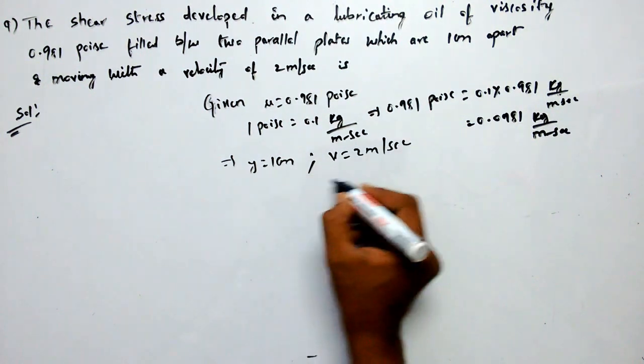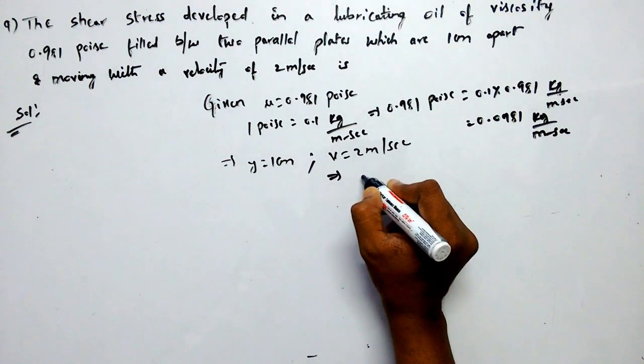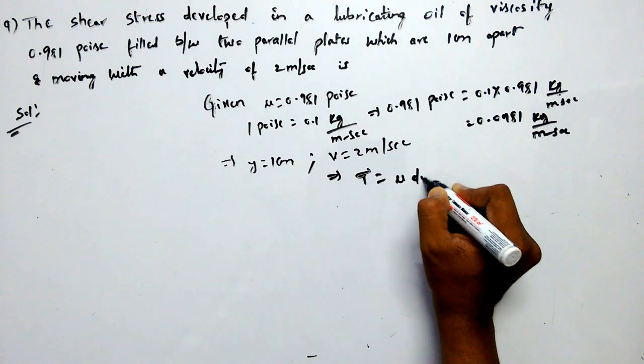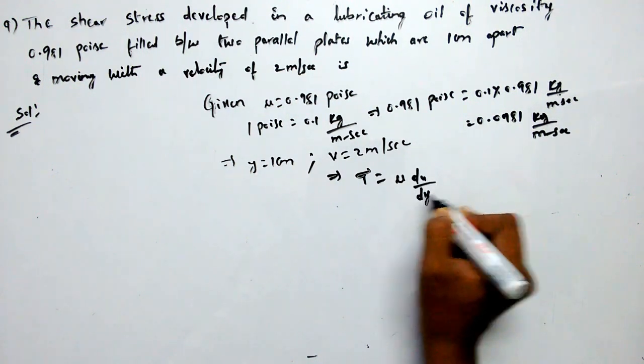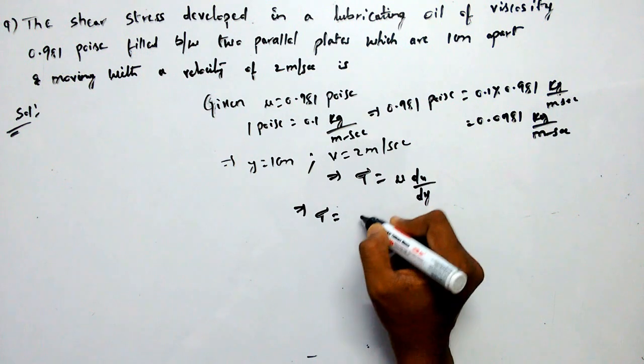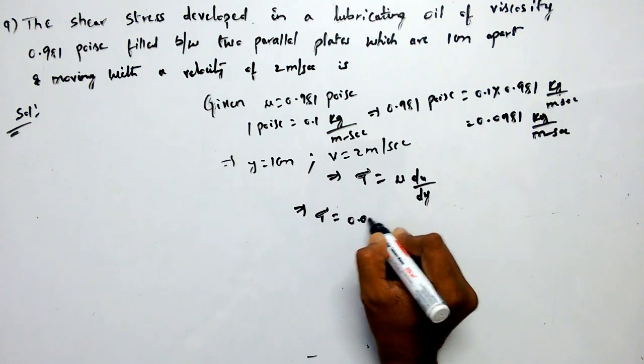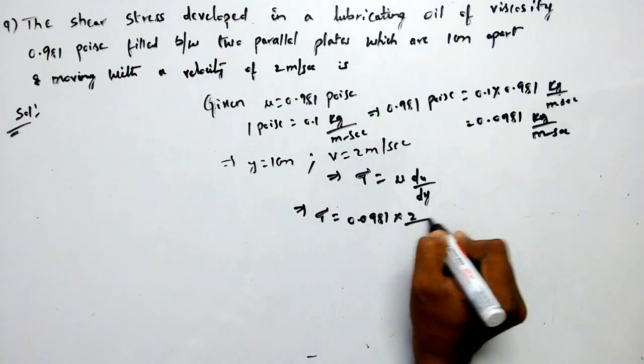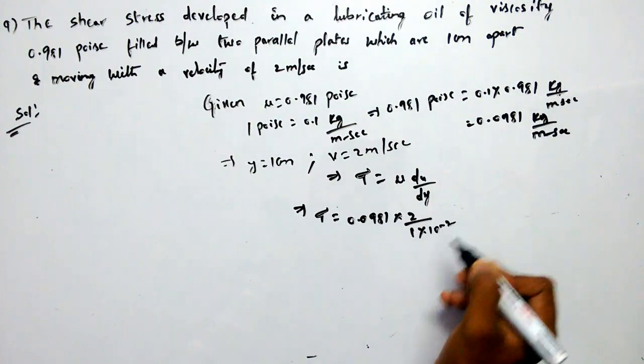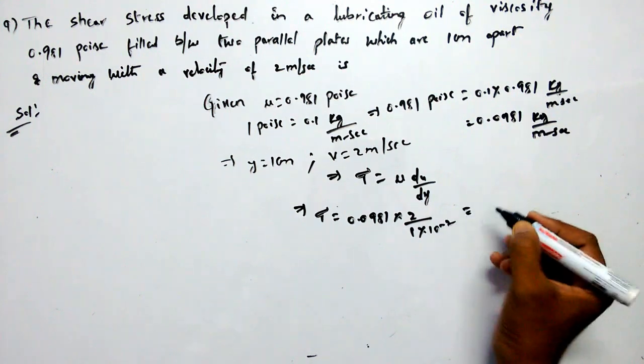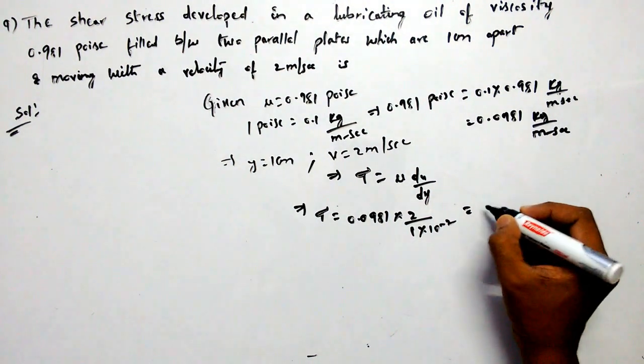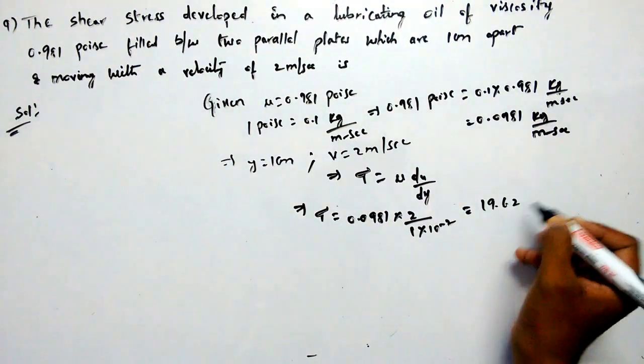From Newton's law of viscosity, tau equals mu into du by dy. That implies tau equals mu is 0.0981 kg per meter second into velocity 2 by 1 into 10 power minus 2. Therefore, the value is 19.62.